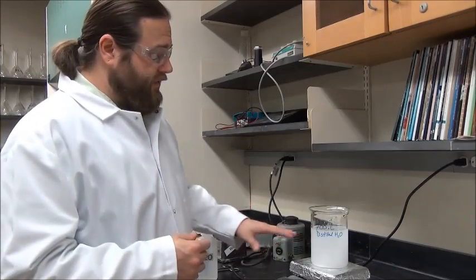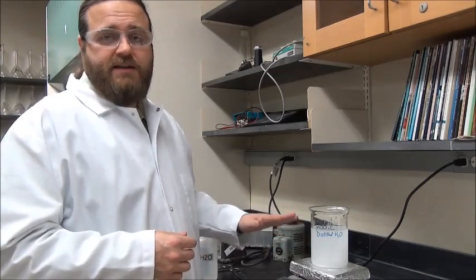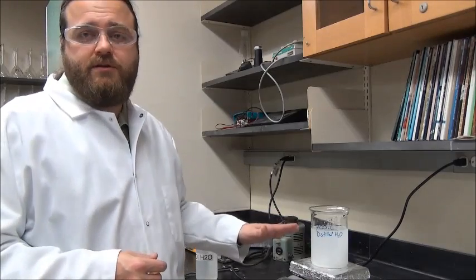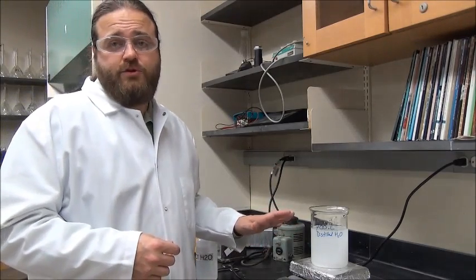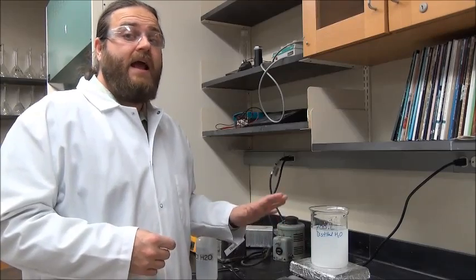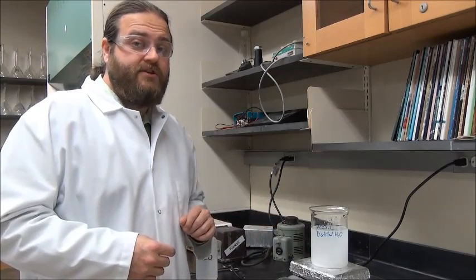The solution will become nice and crystal clear. That way we know that all of the alum - the potassium aluminum sulfate dodecahydrate - has fully dissolved in the solution, and we'll be ready to add it to our dish so that we can let it start crystallizing.